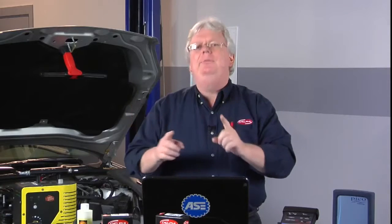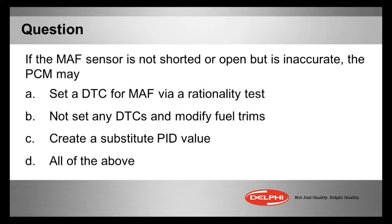Let's go to a question now talking about a mass air flow sensor that's not shorted, not open, but it's inaccurate. The PCM may: A, set a DTC for a mass air flow using a rationality test; B, not set any DTCs but modify the fuel trims; C, create a substitute PID value; or D, all the above. Make your selection now.